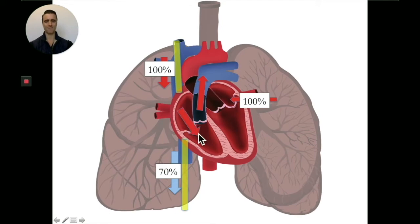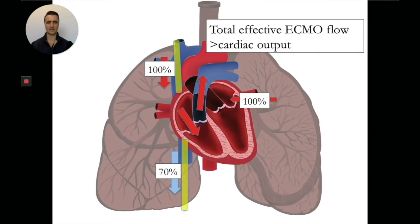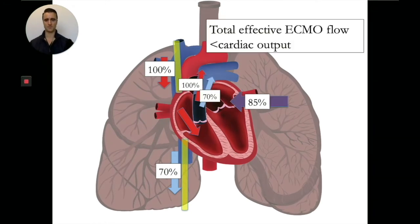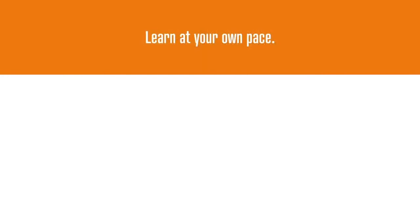That means that everything that goes through the heart is going to be from the ECMO circuit. Contrast that to this situation — in this case, you are going to expect that there is going to be some blood that is going to be shunted across.